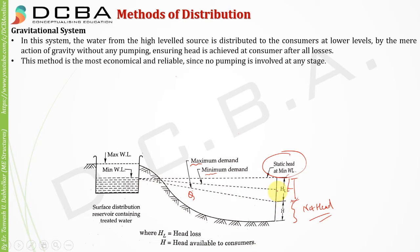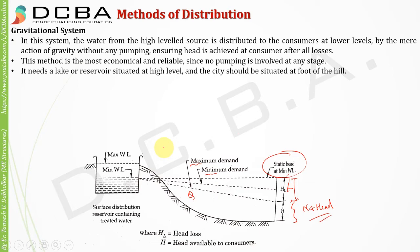This method is the most economical and reliable since no pumping is involved at any stage. During a fire outbreak, the worst thing that can happen if you are depending on a pump is that your pump fails — then you cannot supply water. The gravitation system proves better because it depends on no pumps; it depends on gravity, which is always present. It needs a lake or reservoir situated at high level with the city at the foot of the hill. Pumping is normally not required at any stage.